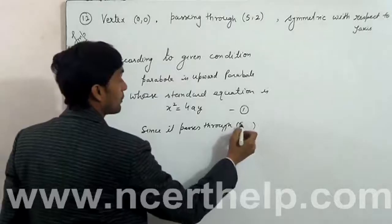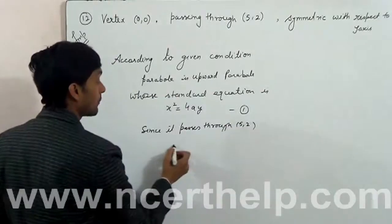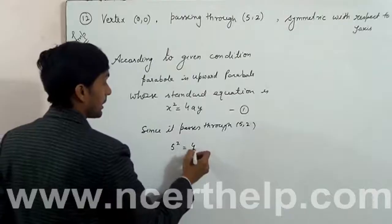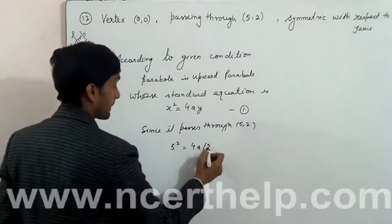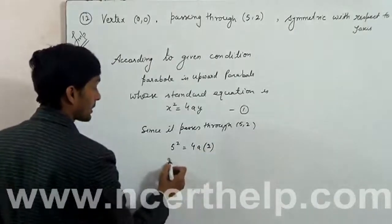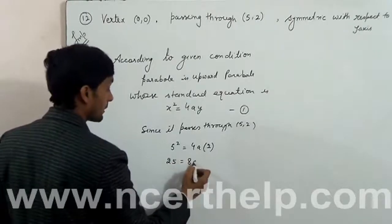It passes through (5,2). We can put 5 in place of x and 2 in place of y. So 25 = 8a.